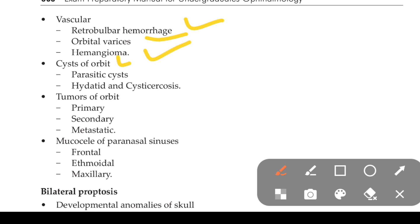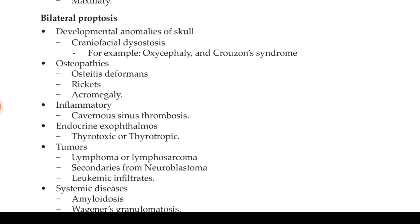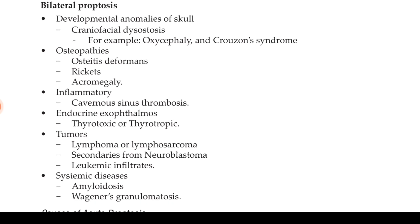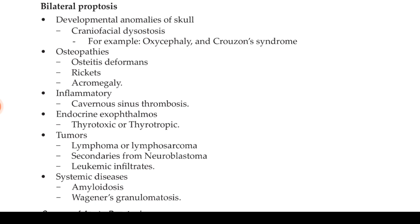Cystic causes include parasitic cysts, hydatid cyst, or cysticercosis. Tumors may be primary, secondary, or metastatic. Mucoceles include frontal, ethmoidal, and maxillary mucoceles. Now coming to causes of bilateral proptosis.